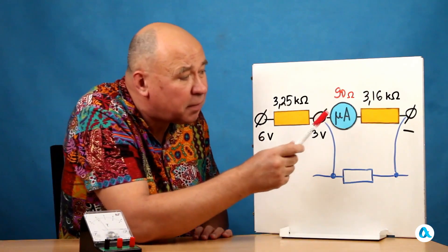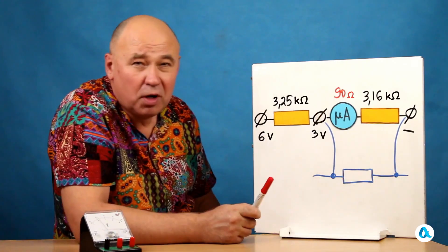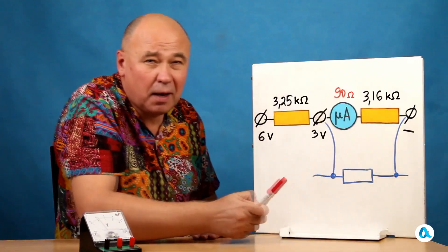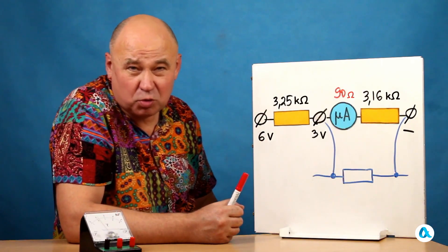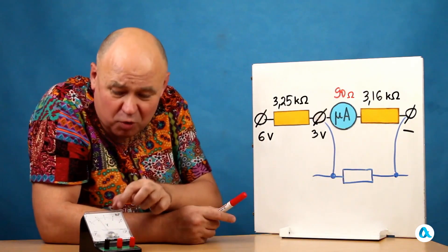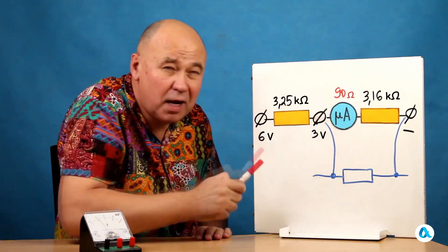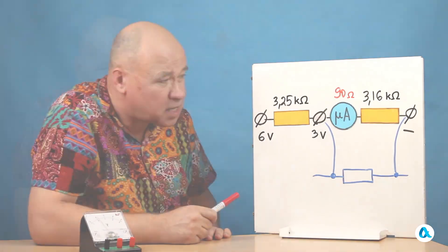And when I apply a voltage of 3 volts to this resistance, a current of about 1 milliampere will flow through the circuit. So, 3 volts is exactly the maximum on the scale here. And the microammeter's needle will deflect to its full angle.